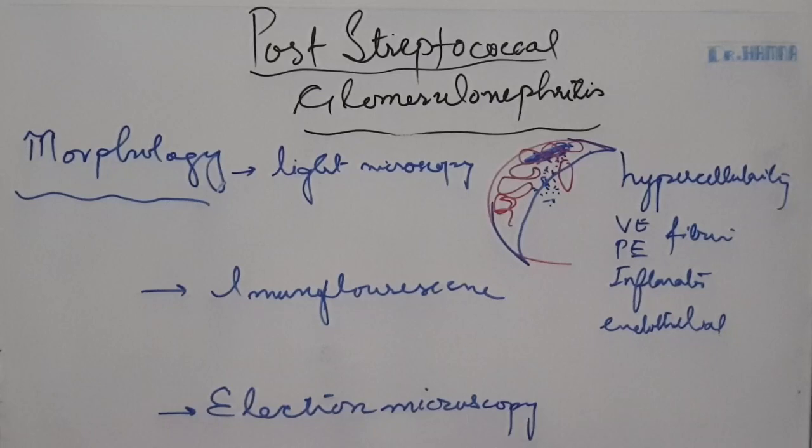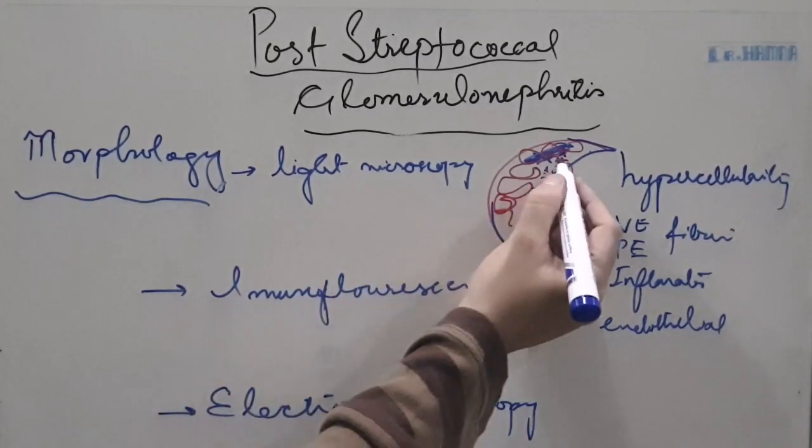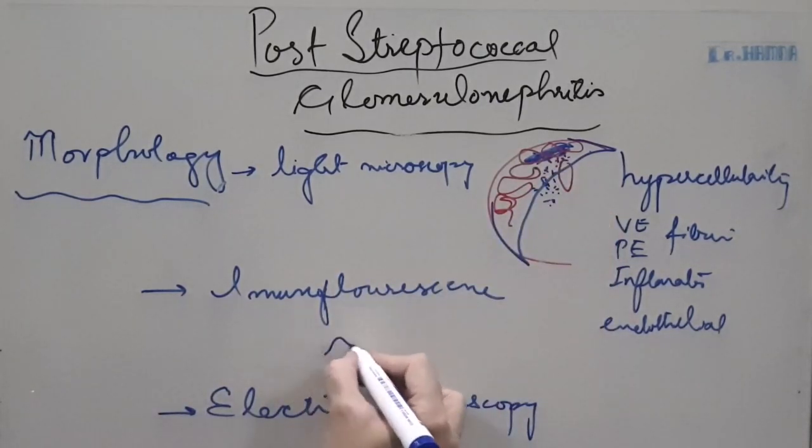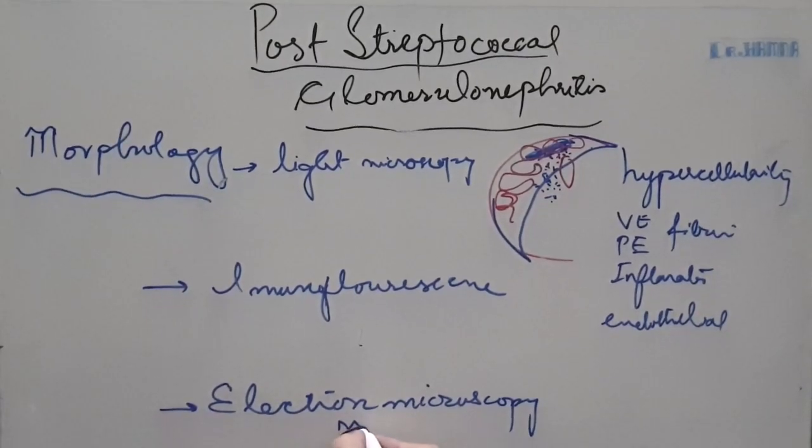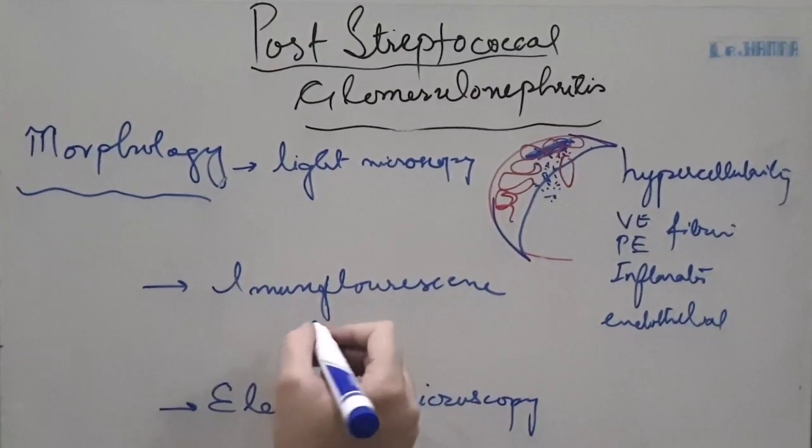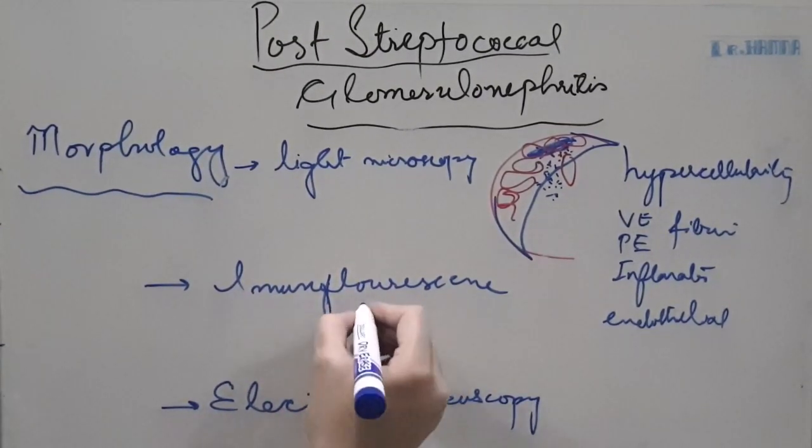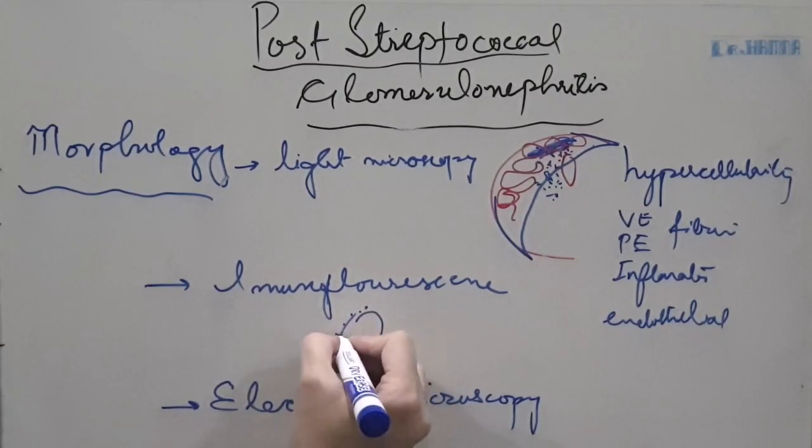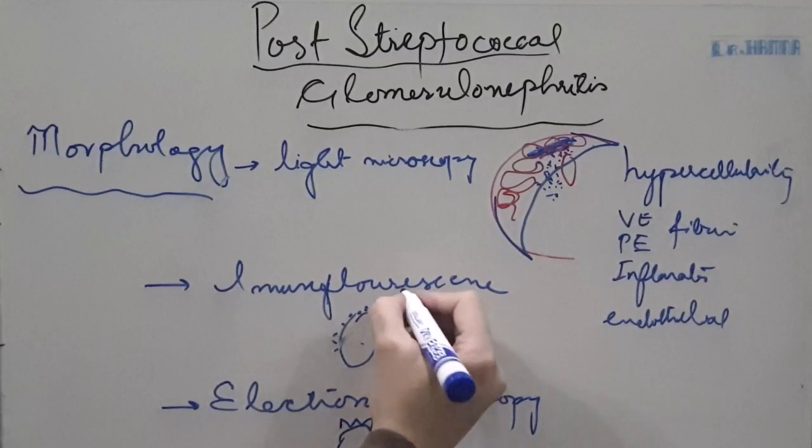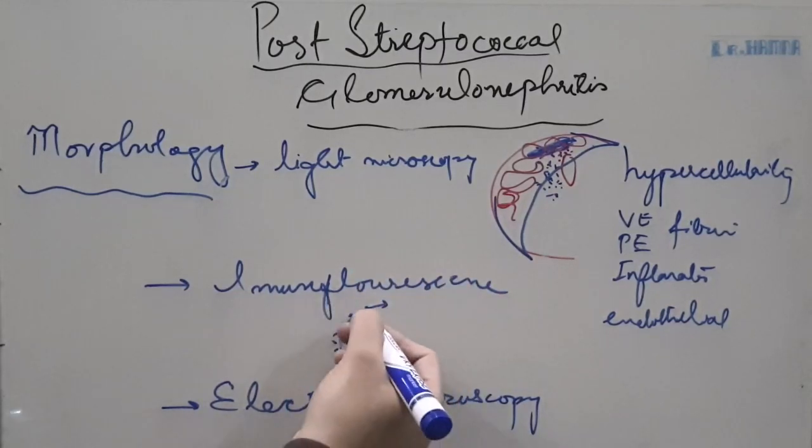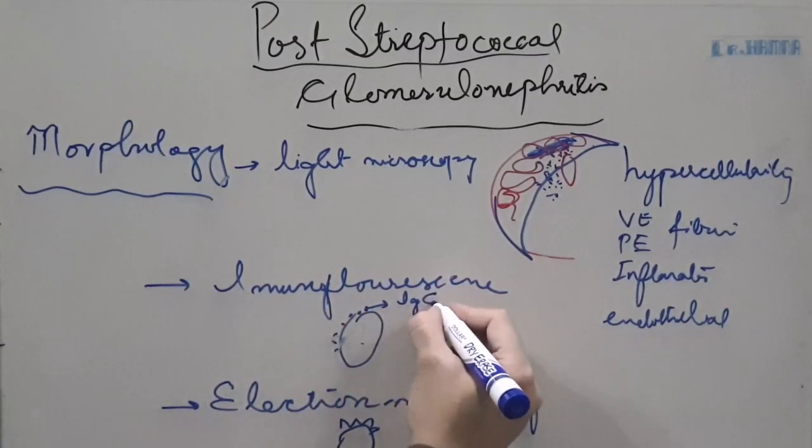In immunofluorescence, these antigen antibody complexes look like humps. In electron microscopy, these look like humps. For example, if this is the blood vessel, these deposits will look like small humps on electron microscopy. And on immunofluorescence, you will see granular deposits. If this is the blood vessel, you will see granular deposits just like the antigens were deposited along the basement membrane. These look like granular deposits on the immunofluorescence and these deposits comprise of the antibodies which were formed against these antigens, and these antibodies are understandably IgG and IgM. Thank you.